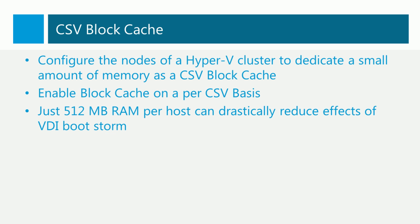CSV block cache is a new feature that improves the read performance of selected cluster shared volumes. It's configured on a per-cluster basis to dedicate a small amount of memory on each node in the cluster to act as a read cache for selected CSVs. We then turn it on on a per-CSV basis, selecting those CSVs that are very read-intensive. Just a small amount of memory can make a drastic improvement to read performance. Microsoft reckons that 512 MB of RAM is the sweet spot and can greatly reduce the time it takes for a bootstorm in a virtual desktop infrastructure.